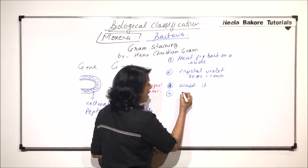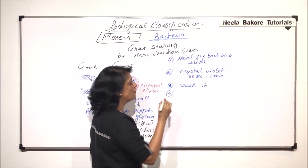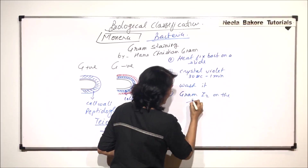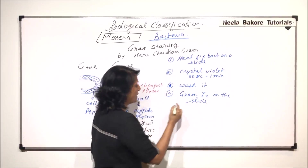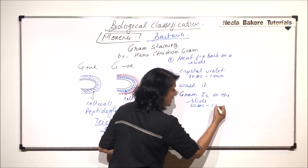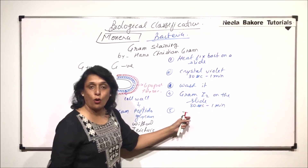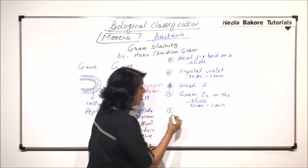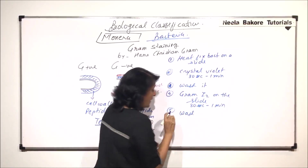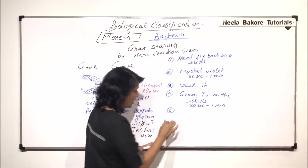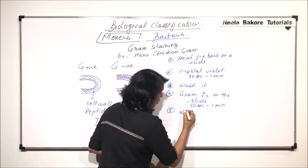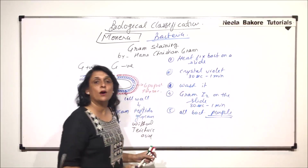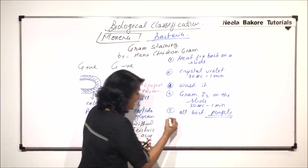Step four: we add Gram iodine on the slide and again allow it to stay for about 30 seconds to a minute. Then we tilt the slide and remove all the iodine. Before washing, what we find is that all bacteria appear purple — that means all of them have taken that purple stain.